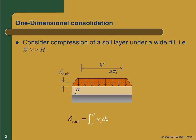Just as with any engineering material, we compute the deformation as the strain integrated over the length of the element — in this case, epsilon z dz integrated from zero to the thickness of the layer h. Because we're engineers and basically lazy, rather than solving this integral, we'll approximate it by dividing the soil into sub-layers and compute the settlement as the sum of the strain in each sub-layer times the thickness of each sub-layer.